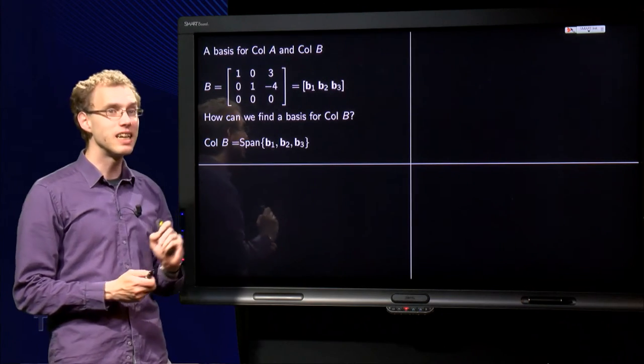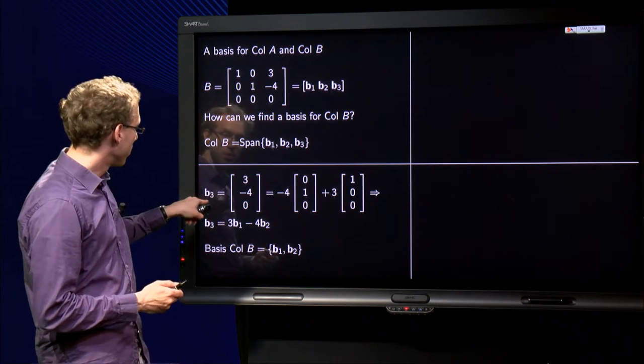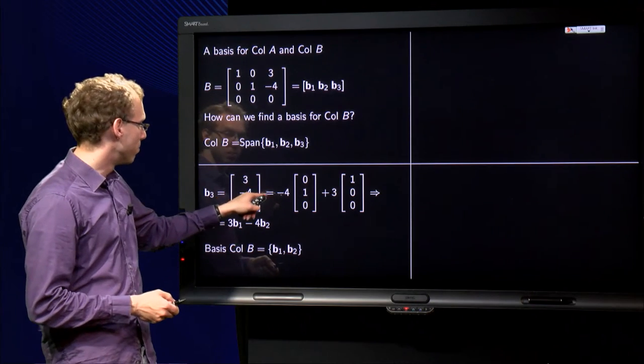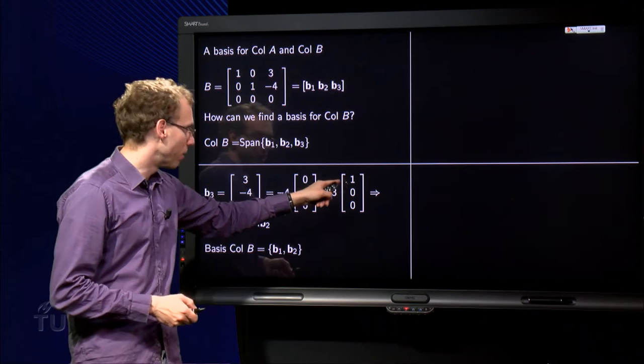Well, a basis has to be independent. But we see b₃ equals [3, -4, 0] equals -4 times [0, 1, 0] plus 3 times [1, 0, 0].